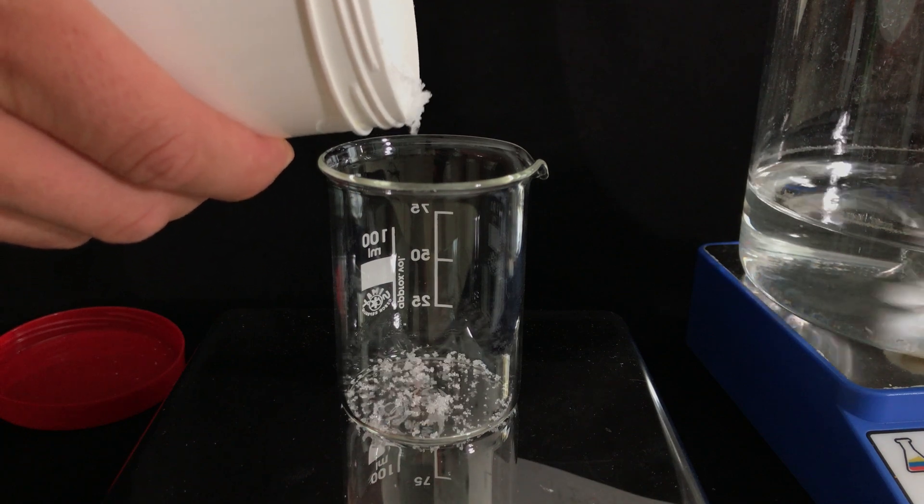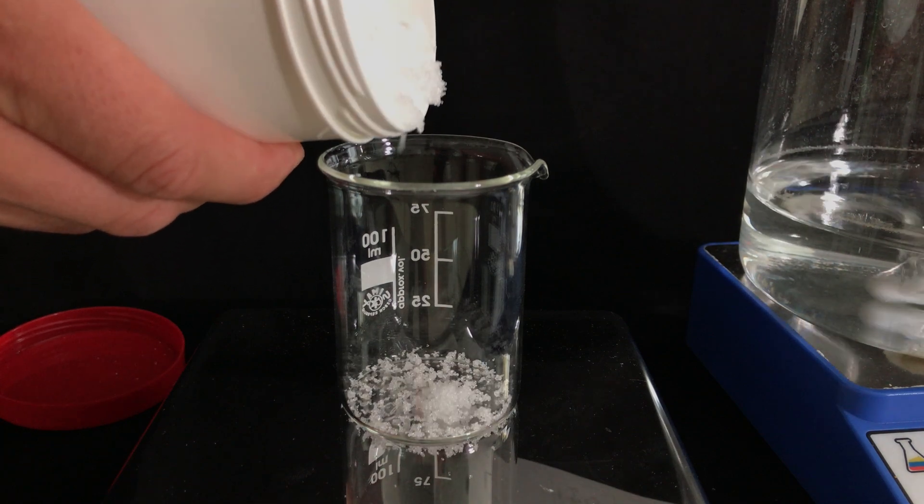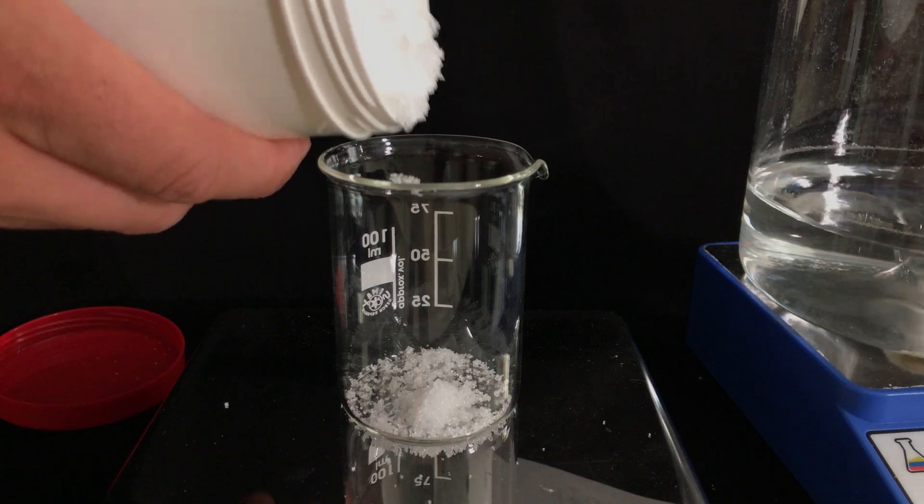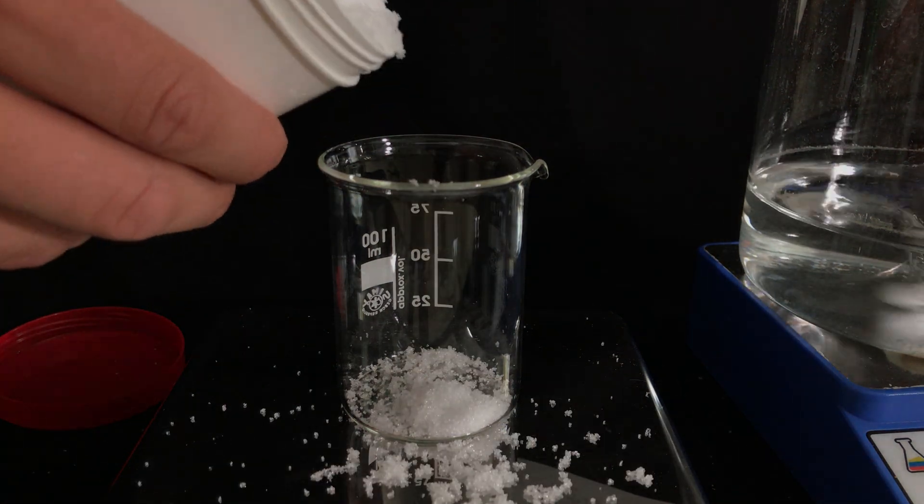Ammonium thiocyanate is highly soluble in water and therefore we won't have the same problem as with mercuric chloride. I spilled some, but fortunately it's not very toxic.